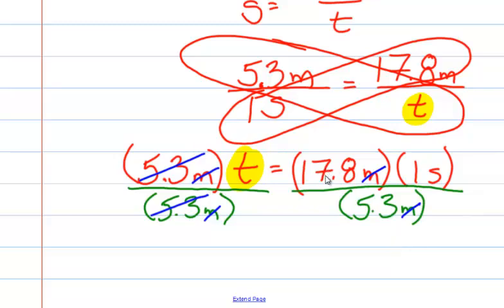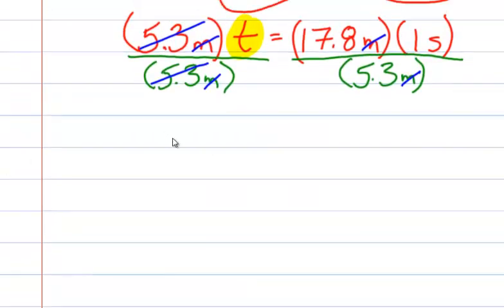We know that 17.8 times 1 is 17.8. So if you want, you can take this step to just help keep you on pace. And just write down again that t, because all of this is canceled out, is equal to...